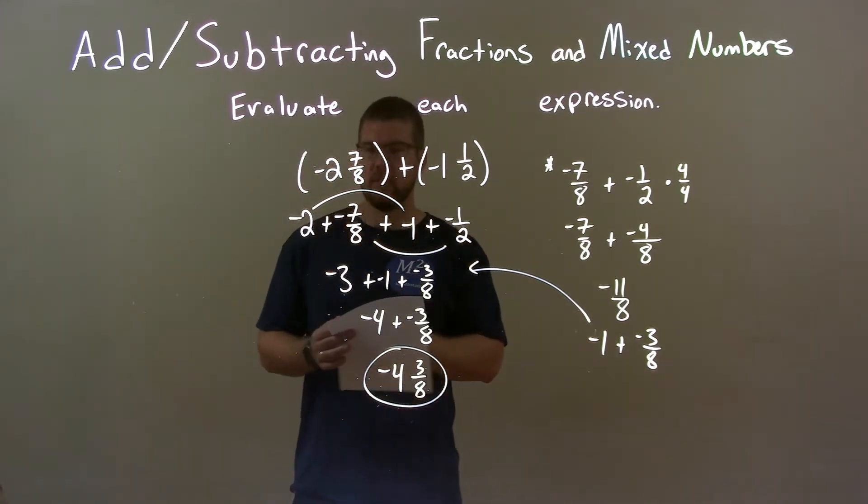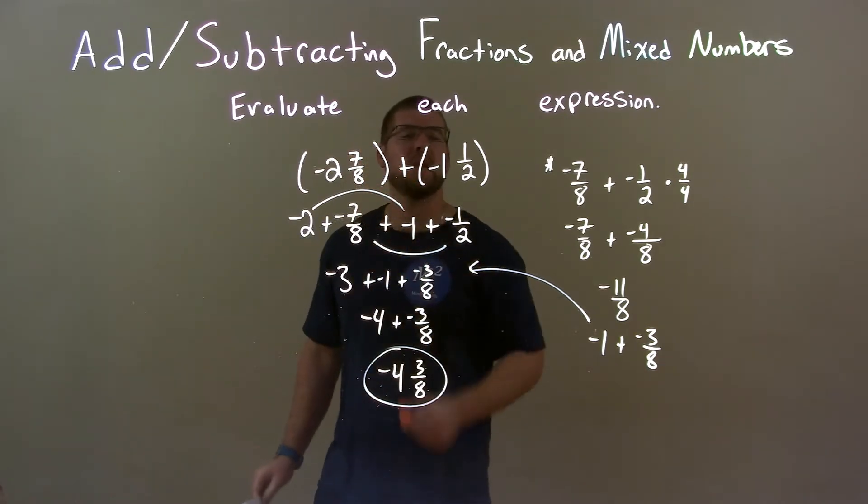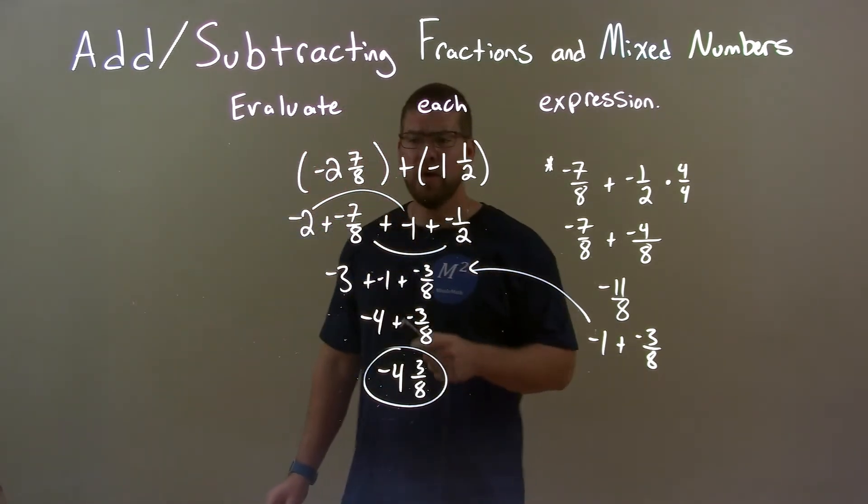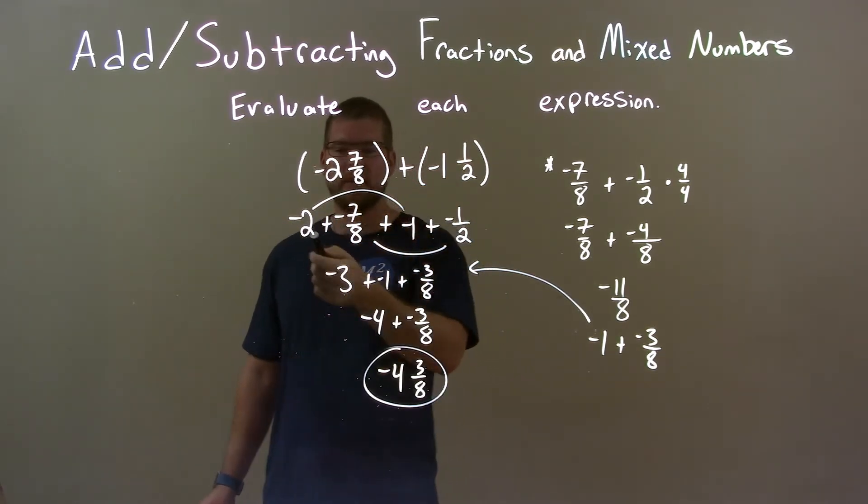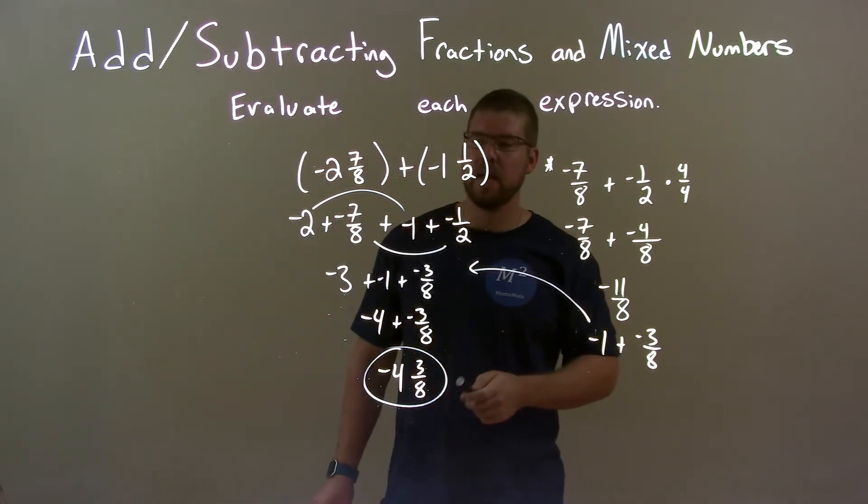So, quick recap. We're given negative 2 and 7 eighths plus a negative 1 and 1 half. Well, I broke those down to be whole numbers and proper fractions. We added the whole numbers and added the proper fractions.